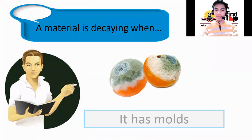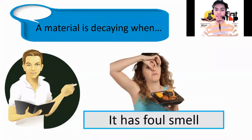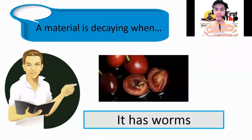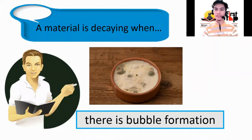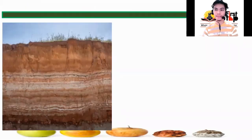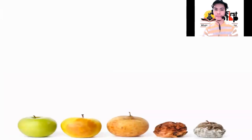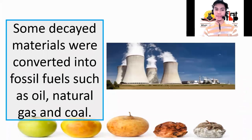When it has molds, it has foul smell, it has worms, and there is bubble formation. Some decayed materials are compressed under water and thick layers of the soil over millions of years ago.